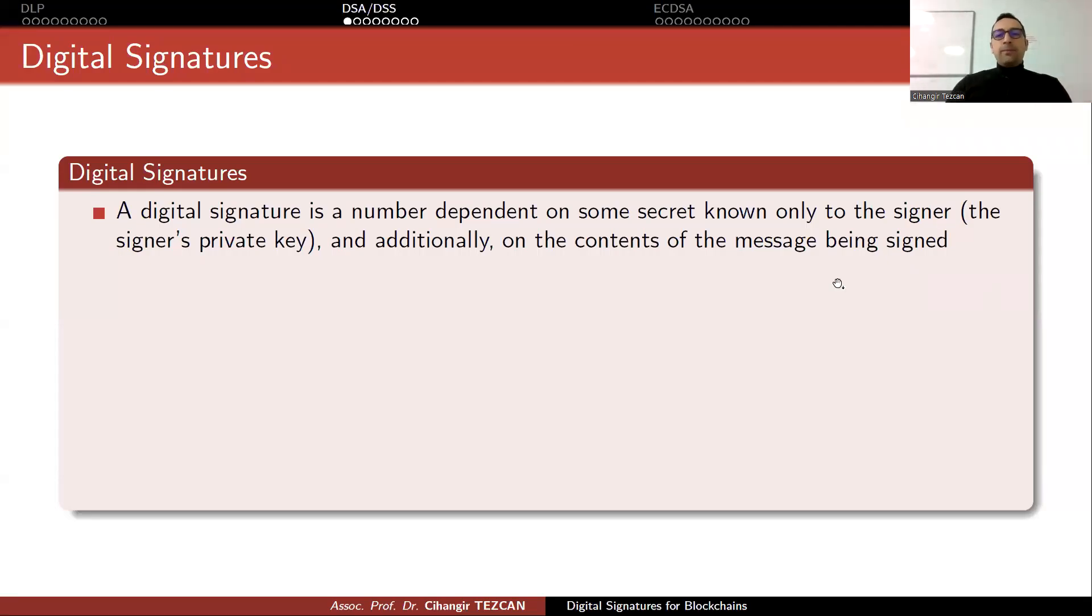Now that we know the discrete logarithm problem, we can explain what a digital signature algorithm is. After the digital signature algorithm, we will talk about elliptic curve digital signature algorithm, but both of them are analogous. In one case you use ZP, in the other one you use an elliptic curve. So it's a good idea to first understand what the digital signature algorithm is, because that way we will better understand how the elliptic curve digital signature algorithm works.